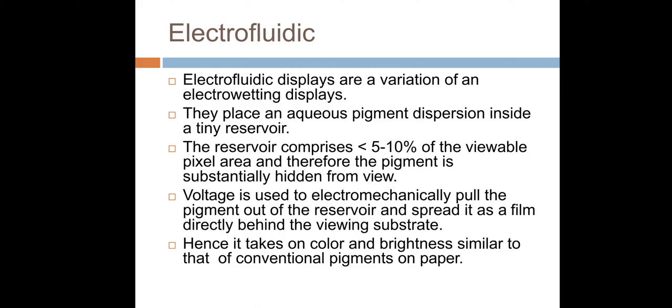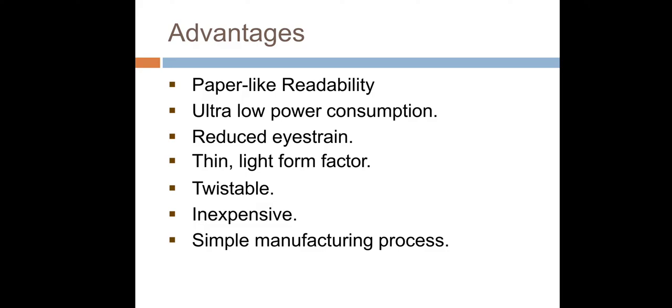Electrofluidic technology. Electrofluidic displays are a variation of an electrowetting displays. They place an aqueous pigment dispersion inside a tiny reservoir. The reservoir comprises less than 5 to 10 percent of the viewable pixel area and therefore the pigment is substantially hidden from the view. Voltage is used to electromechanically pull the pigment out of the reservoir and spread it as a film directly behind the viewing substrate. Hence, it takes on color and brightness similar to that of a conventional pigment on paper.